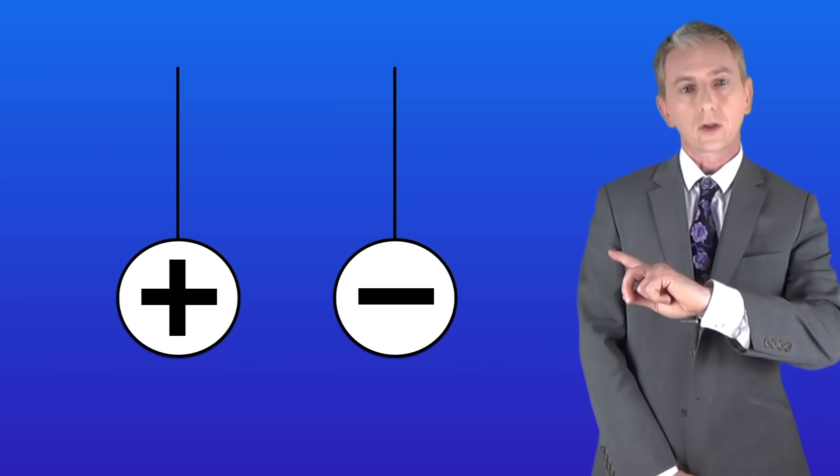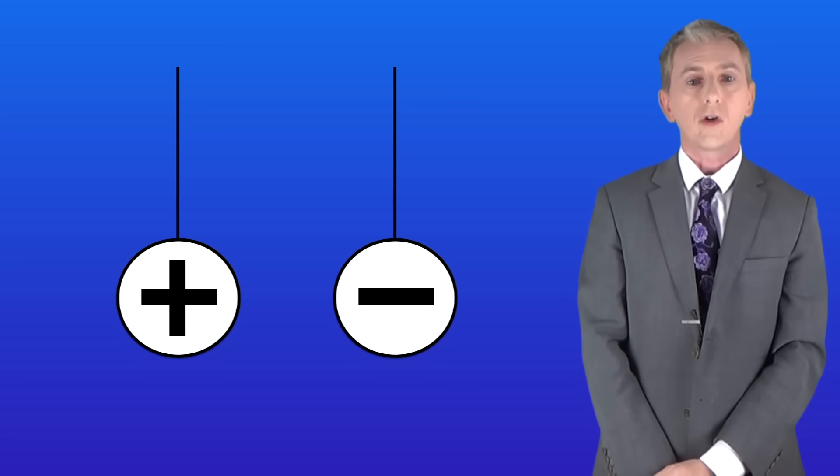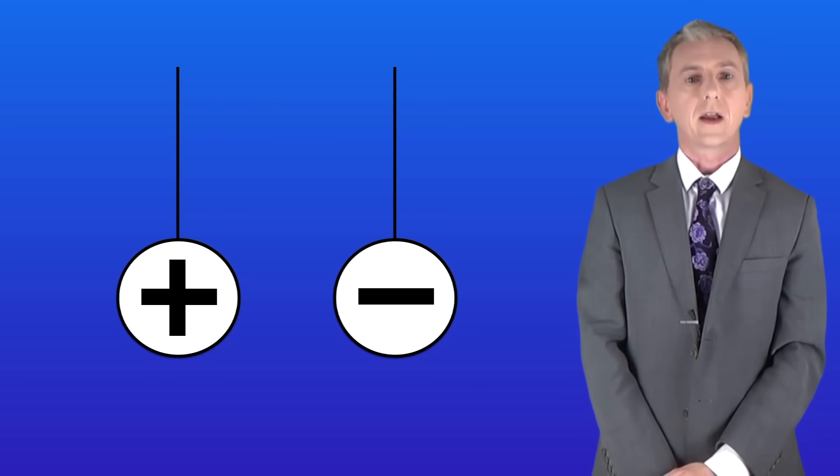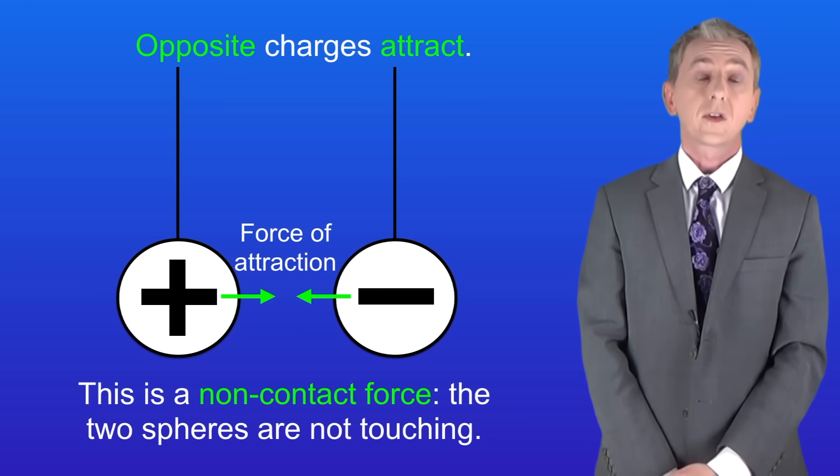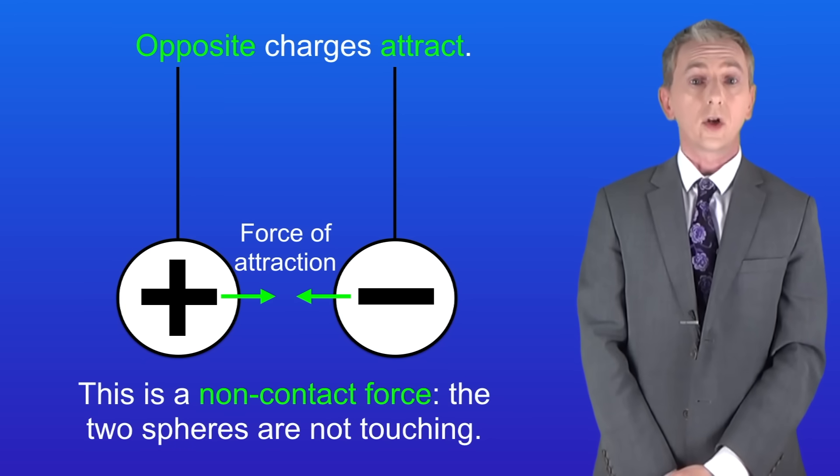I'm showing you here two plastic spheres. The sphere on the left has a positive charge and the sphere on the right has a negative charge. Now the first key fact that you need to understand is that objects carrying opposite charges attract. So that means that there's a force of attraction between these two spheres. Scientists call this a non-contact force because the two spheres are not touching.